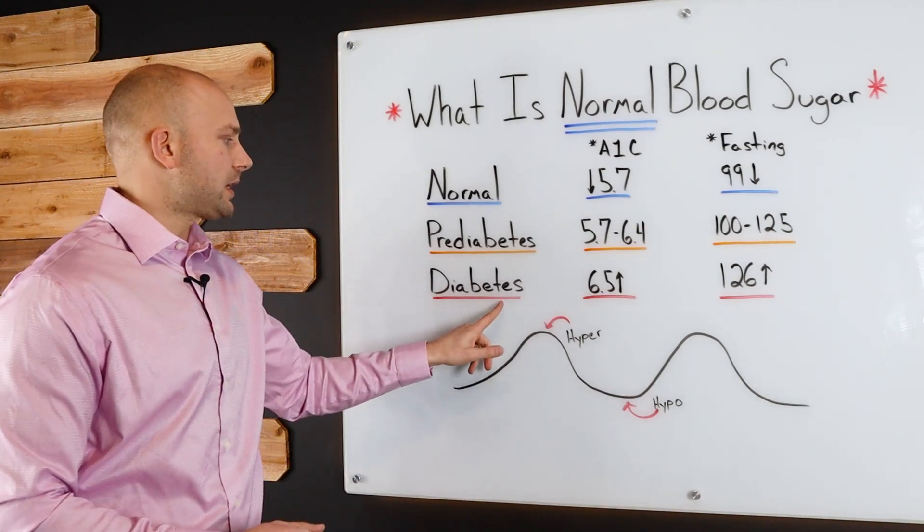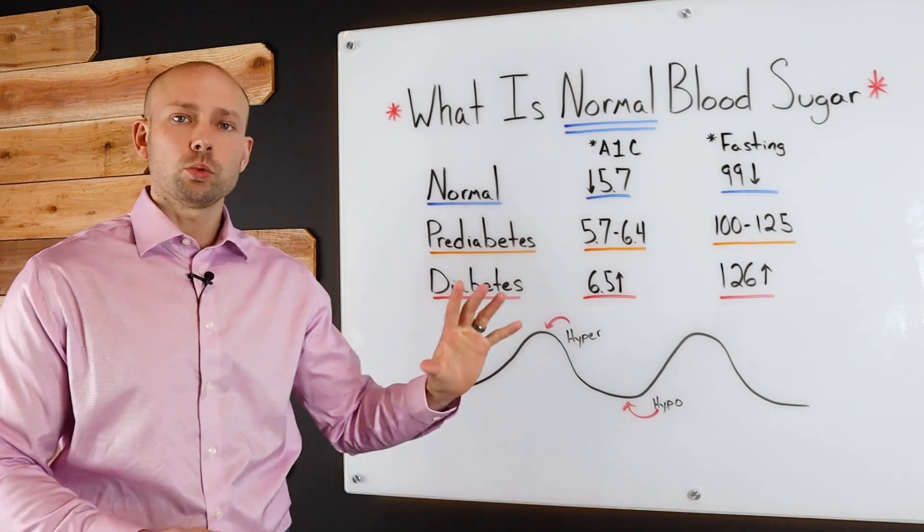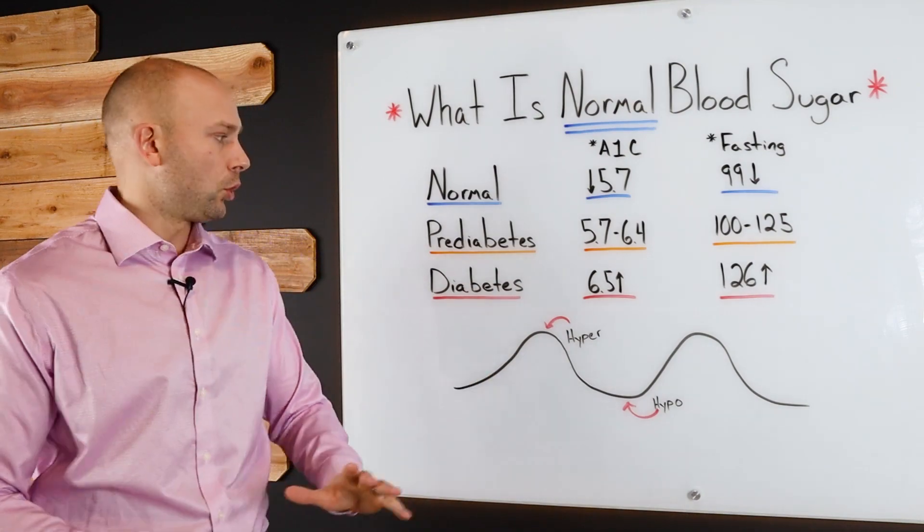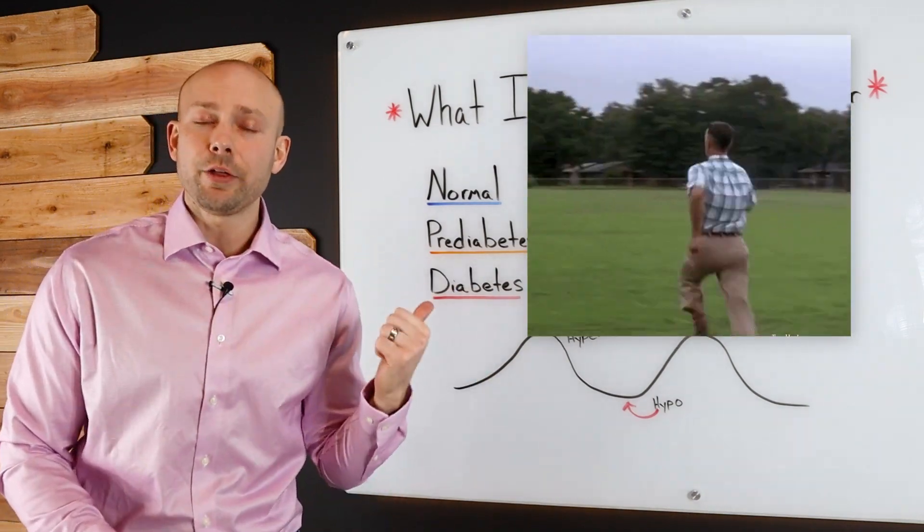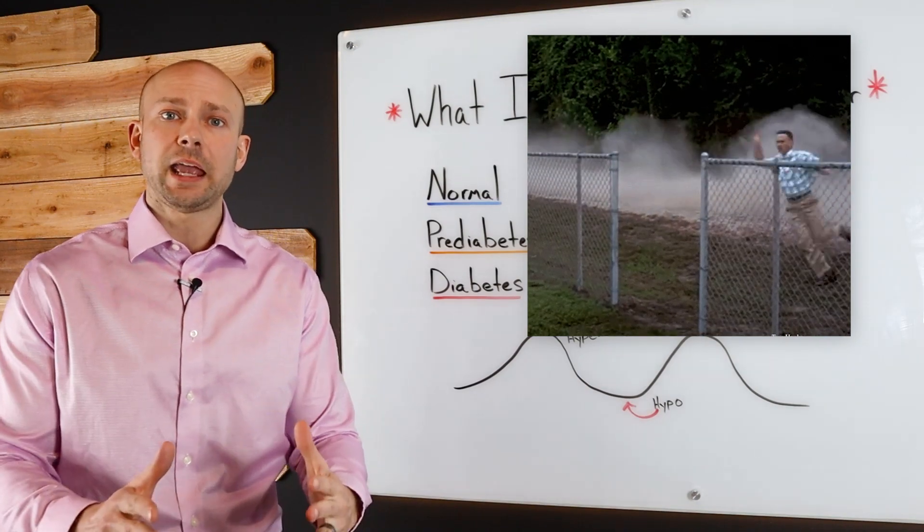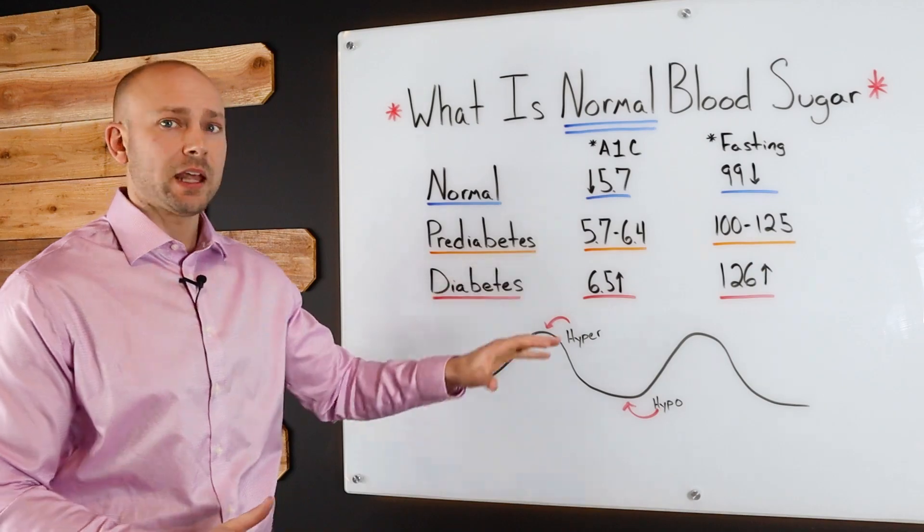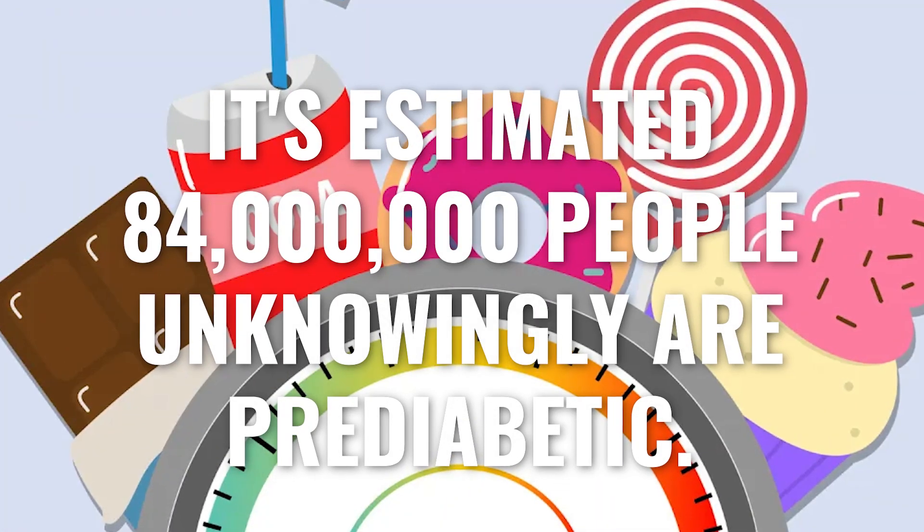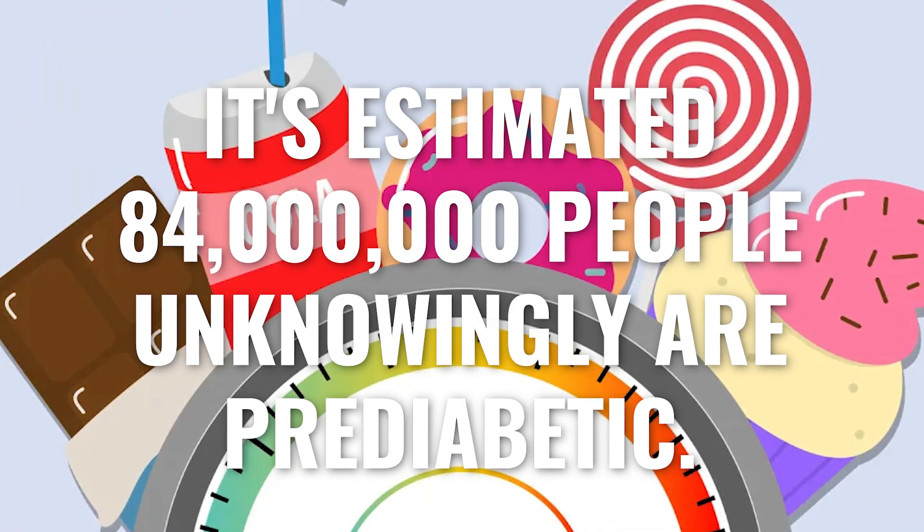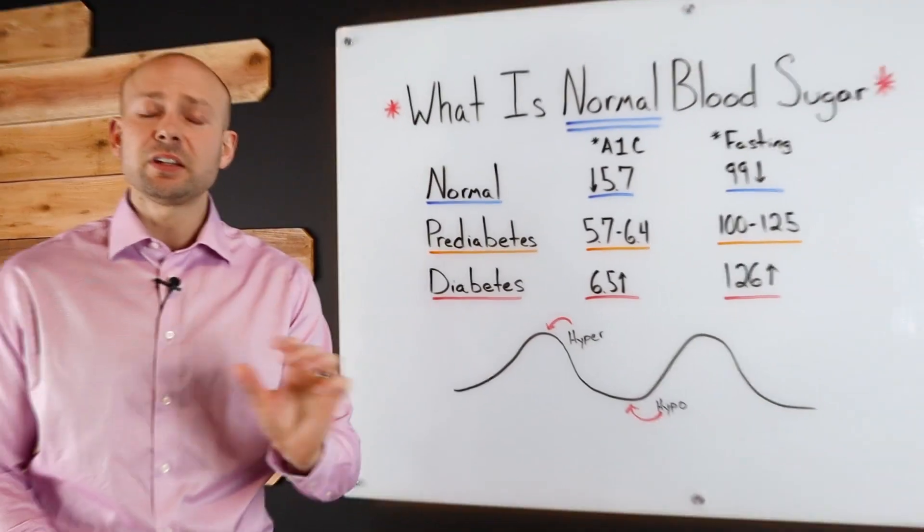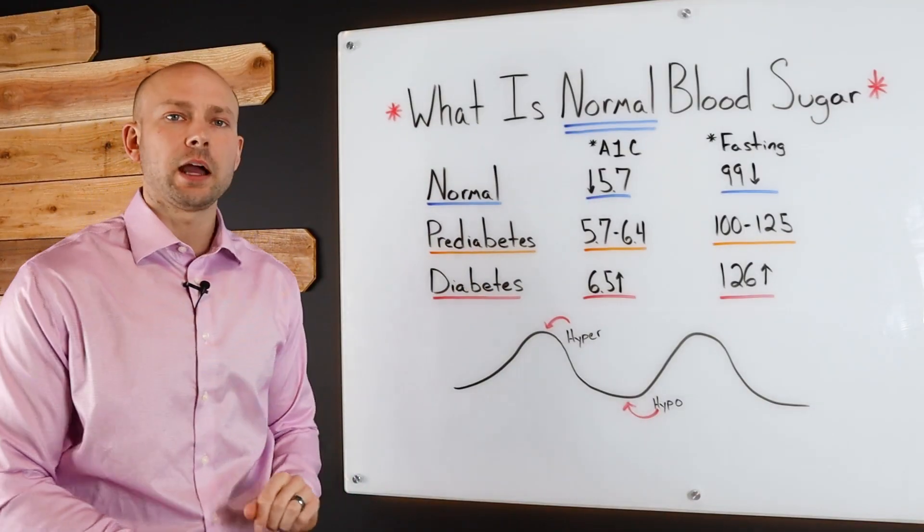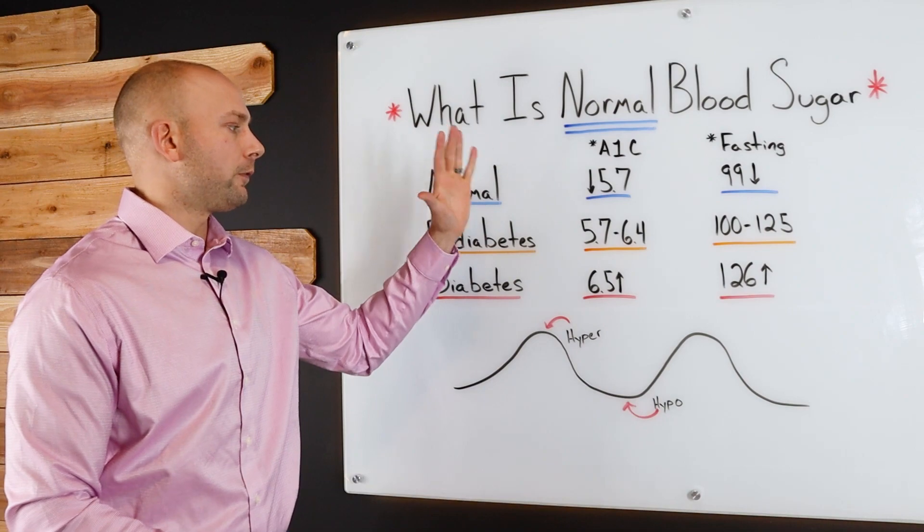And let me tell you, if anybody ever tells you that you cannot reverse type 2 diabetes or prediabetes, then run the other direction because you certainly can. And we have to pay attention if we're in this prediabetic state because it's estimated that 84 million people unknowingly are prediabetic. And within 5 to 10 years, they'll be full-blown type 2 diabetics. So we want to focus on reversing this.